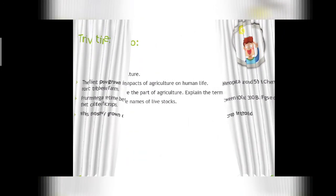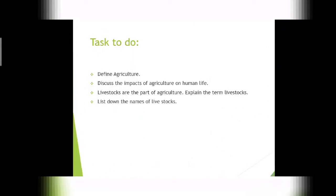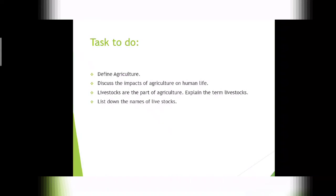Now for your task: in your copy, you have to define agriculture and write down what agriculture actually is. Then discuss the impact of agriculture on human life. Since livestock are part of agriculture, explain the term livestock. Finally, list down the names of livestock found in Pakistan.